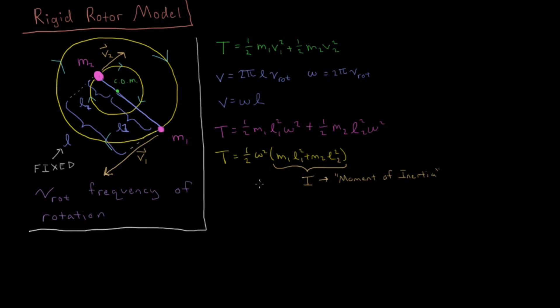That gives us an effective mass for this total system. Now we can rewrite kinetic energy T as 1/2 I omega². Let's also recall from our studies of angular motion that we have the quantity angular momentum L equals the moment of inertia times angular frequency. This L is the angular momentum, which is going to be a very important quantity when we're studying the rigid rotor system. It's going to come up a lot in terms of expectation values and eigenvalues.